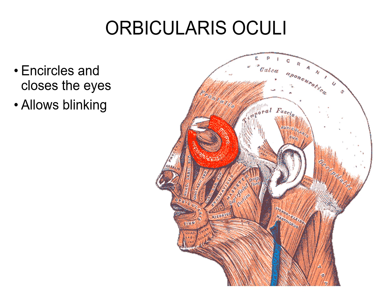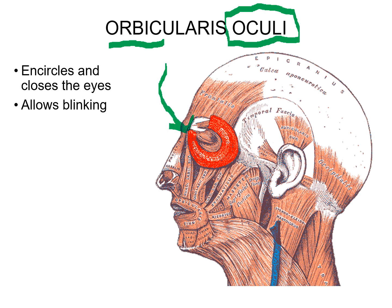Our first muscle is the orbicularis oculi. In the picture the bright red highlights this muscle around the eyes — it's one of those circular or sphincter-type muscles forming an orbit. 'Oculi' refers to the eye, like ocular lenses. What you need to know: where it's located (surrounding the eyes) and what it does — its action. The orbicularis oculi helps you blink, close your eyes, squint, and wink — all those movements right around that orbital area.